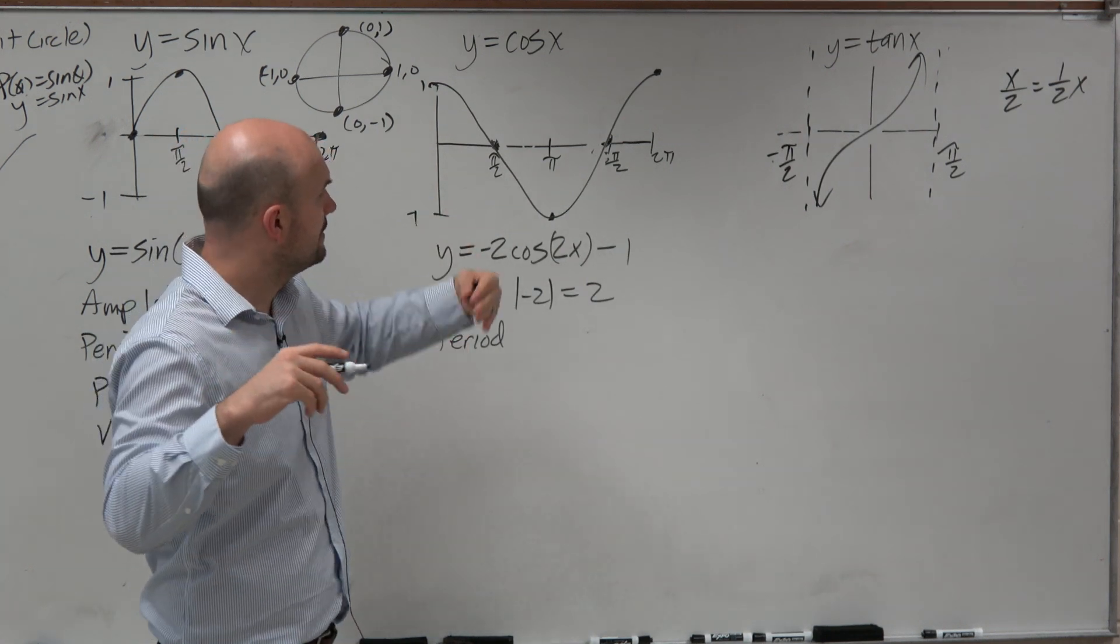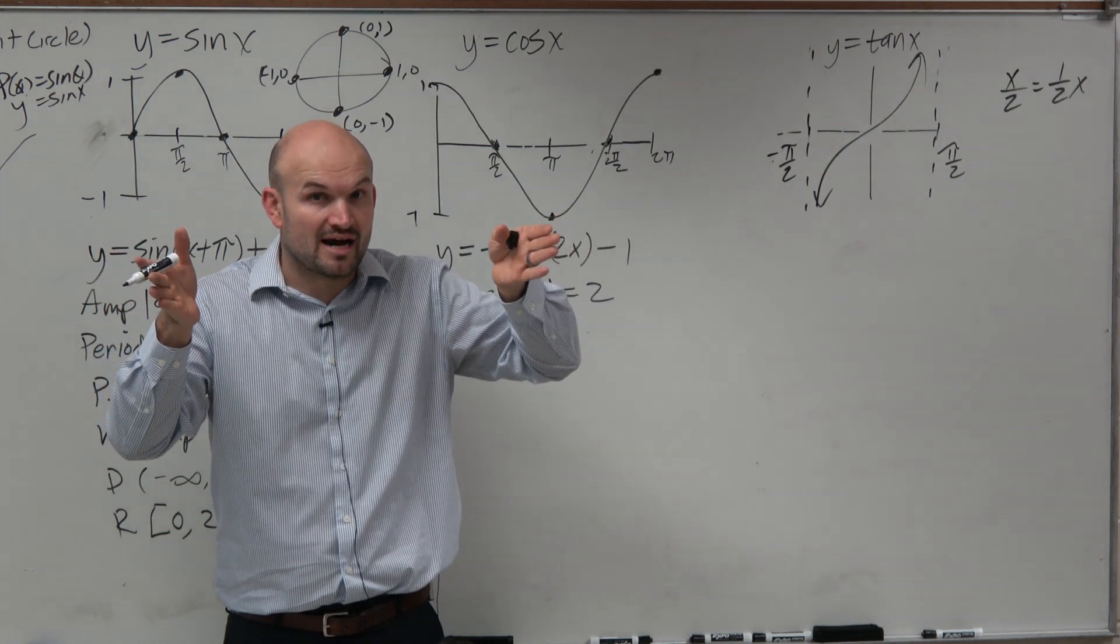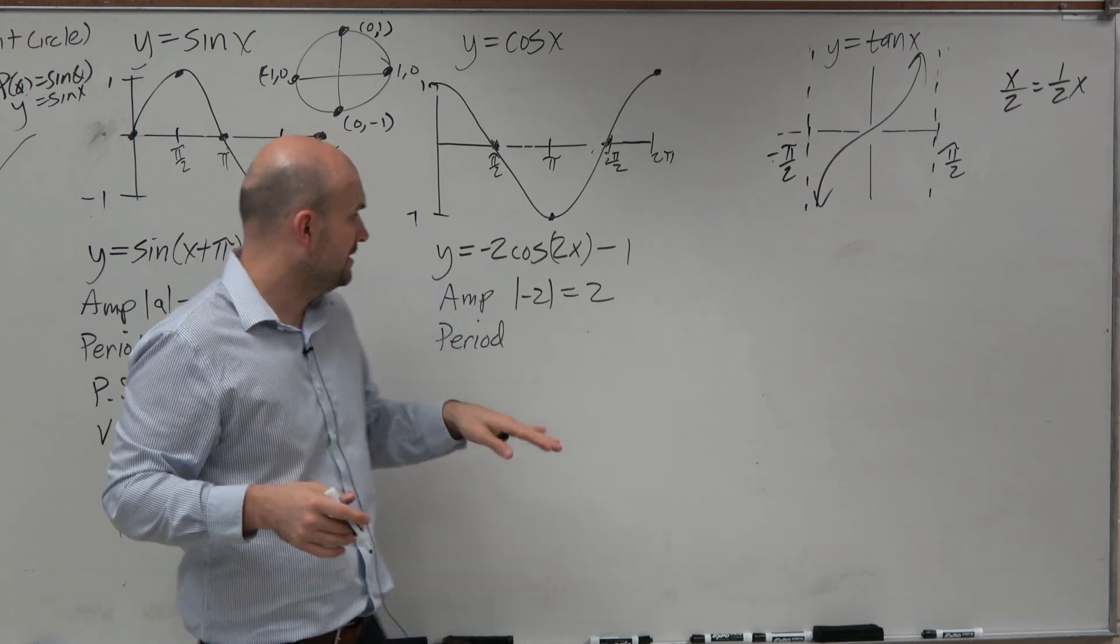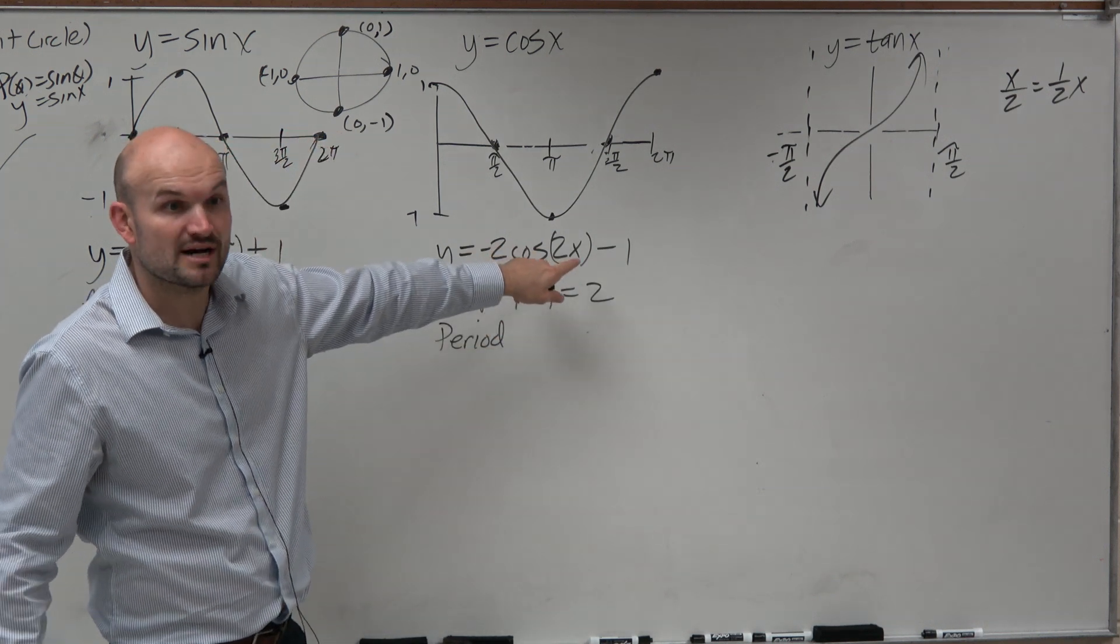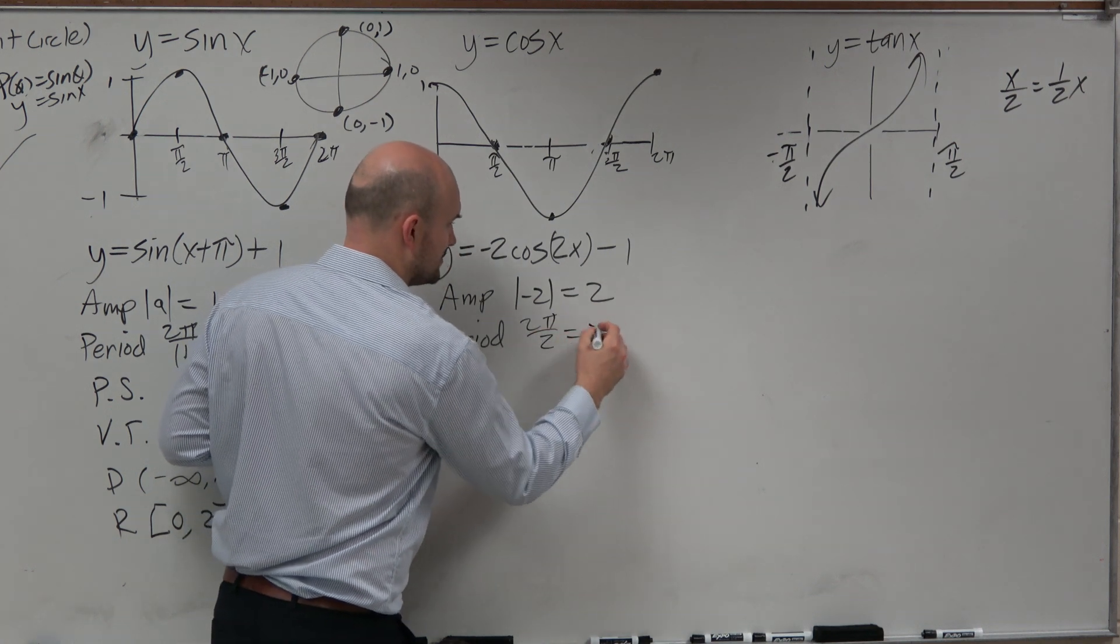But we recognize though, if we horizontally compress the graph, that changes how long it takes the graph to repeat itself. Right? And we can see that this is a horizontal compression. So we take 2π divided by 2, which equals π.